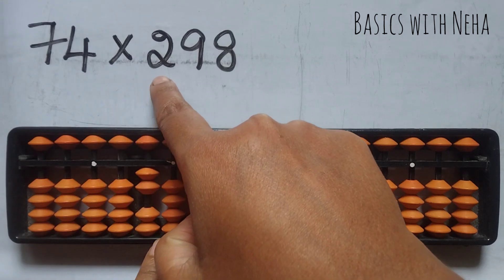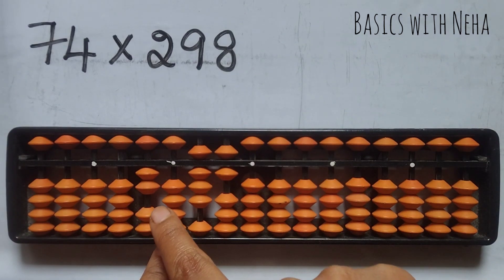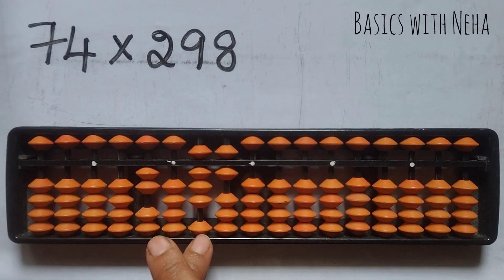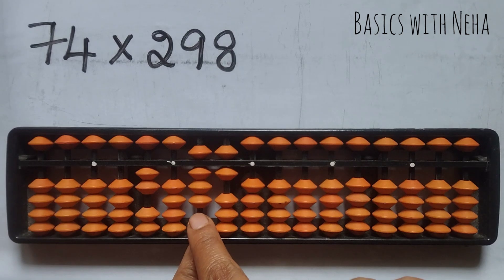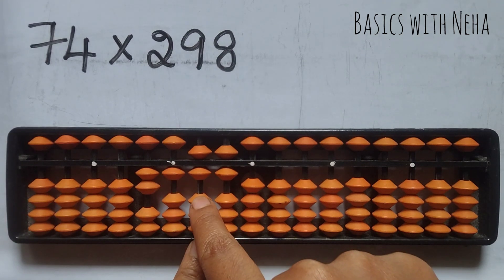4 twos are 8. Any single-digit number should be followed by 0, so it will be 0 and 8. 8 should be placed here. To place 8, it is plus 10 minus 2.